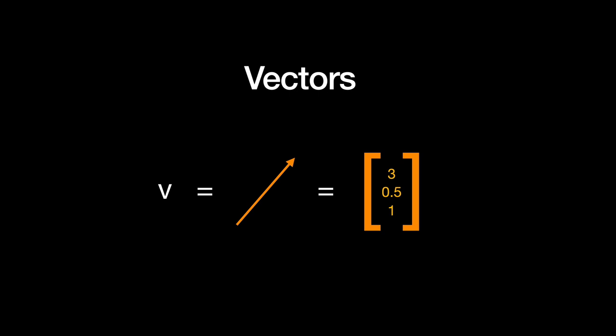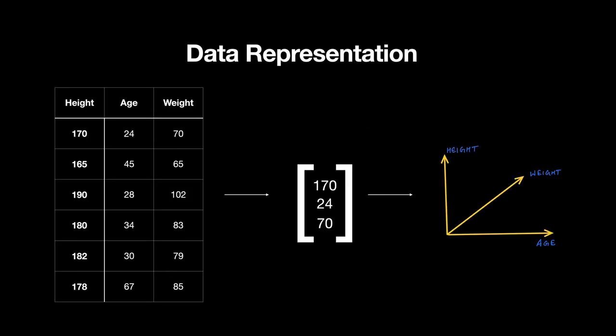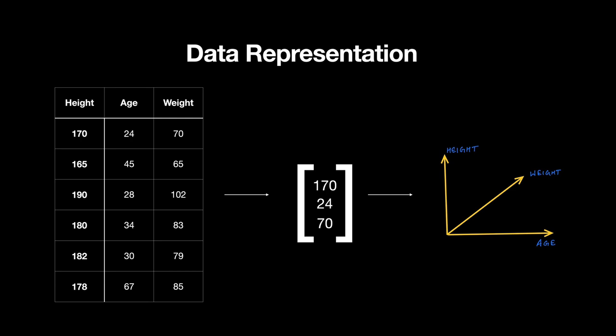Linear algebra deals with vectors and operations on vectors. In NumPy this might be a one-dimensional array of numbers, but geometrically this has both magnitude and direction. Our data can be represented using a vector. For example, one row in this data is represented by this feature vector which has three elements representing three different dimensions. N entries in a vector make it an n-dimensional vector space, and in this case we have three dimensions: height, weight, and age.